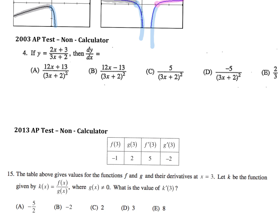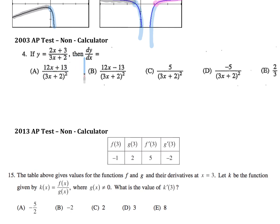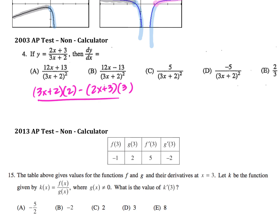Let's try this AP test question. If here's a function, what's the derivative? Doesn't this function involve division? Low D high minus high D low all over low low. What's low? Put that in parentheses. D high. Minus — the division sign is kind of like a very long minus sign, right? That's going to remind me to use subtraction. Low D high minus high — put that in parentheses because we've got to multiply that by D low. Three. All over the denominator, low squared.